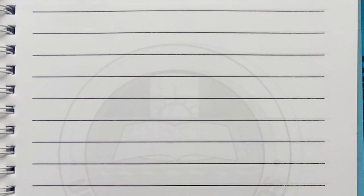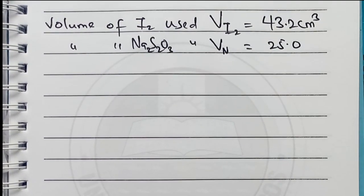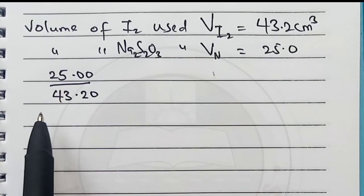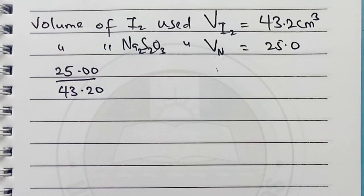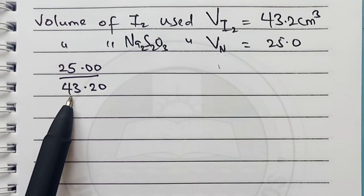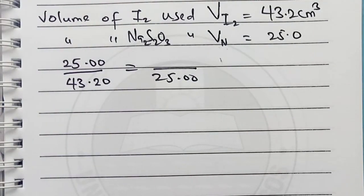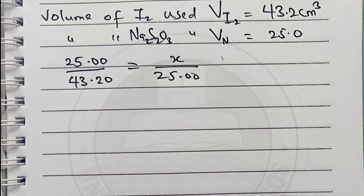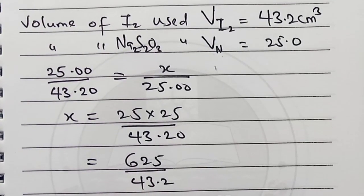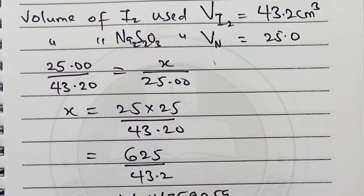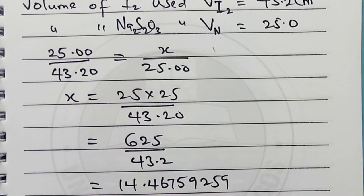Remember the volume of iodine used is 43.2 cm³ and thiosulfate used was 25 cm³. By ratio, we have 25.00/43.20. If they ask us to do it the other way around, we make x the subject and get approximately 14.5 cm³. So if they ask us to use the reverse, the value will be lying between 14.5 to 13.5 cm³.